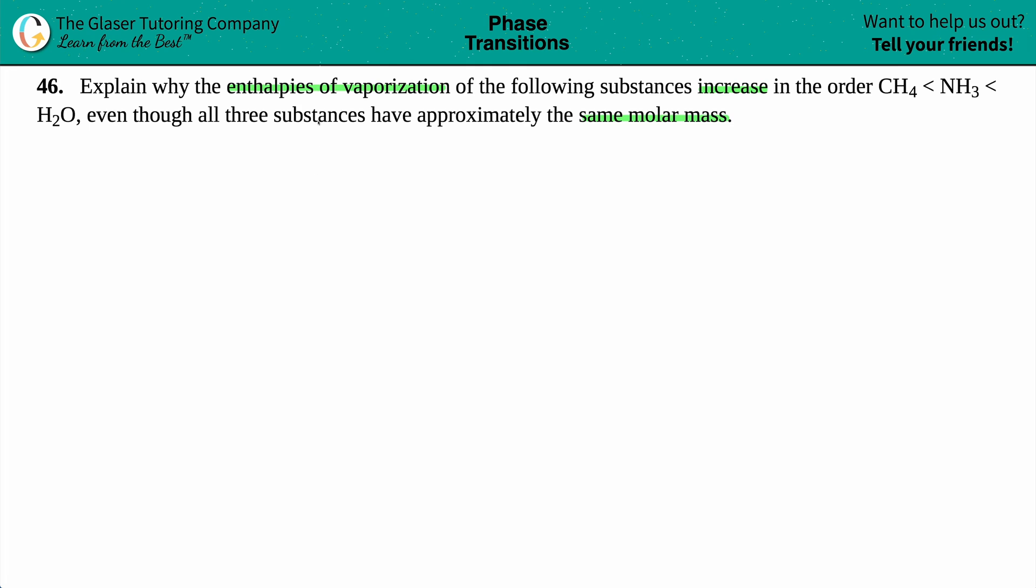Alright, so let's just write this out. So we have CH4 has the least enthalpy of vaporization, then comes NH3, and then comes H2O. So we just have to explain why this is happening. So maybe I'll just put over here that the CH4 has the lowest enthalpy of vaporization, and enthalpy of vaporization is just the amount of energy needed to vaporize, aka convert your liquid into a gas. So the lowest enthalpy of vaporization, and then as you go up above and beyond, you have the highest enthalpy of vaporization.